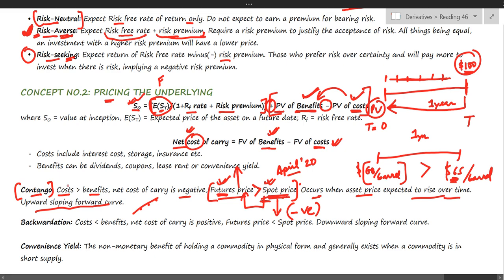The opposite of a contango market is called backwardation. When costs are less than benefits, the net cost of carry is positive, leading to the opposite scenario: futures prices are less than the spot price. The spot price is higher than the forward price, indicating a downward-sloping forward curve, which signals that investors are expecting prices to fall in the near future.